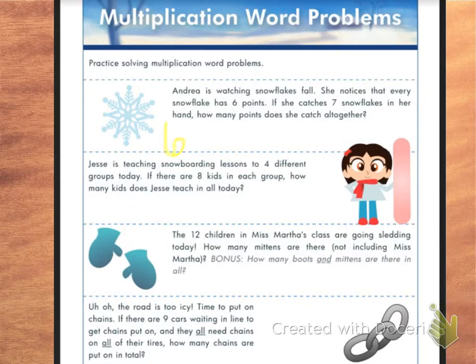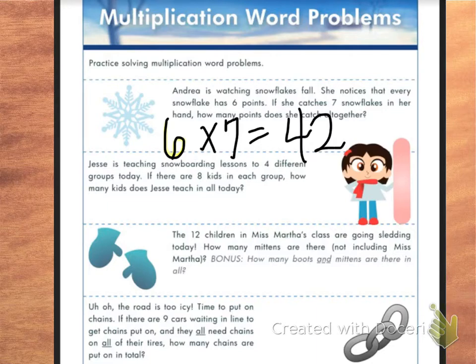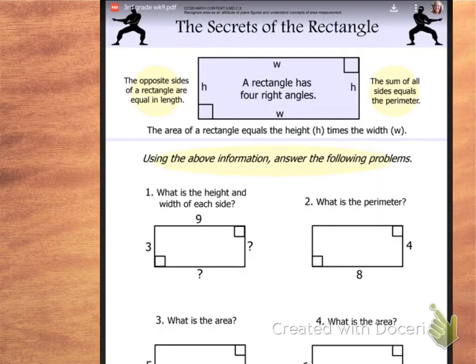Well, if we have six points, let me pick up a different color. Six points times seven snowflakes equals. So all you have to do is skip count by six seven times, or seven six times. Then you can write in the answer, and that's how many points.